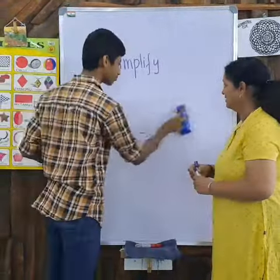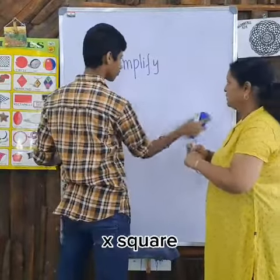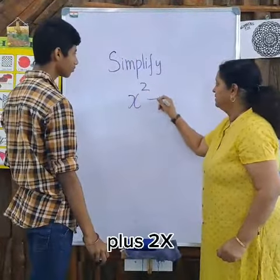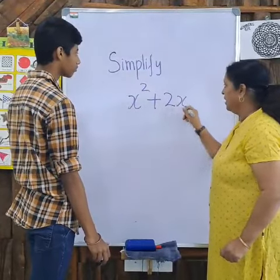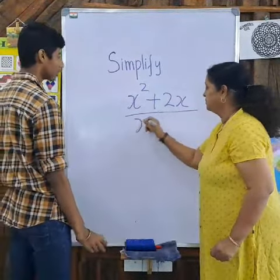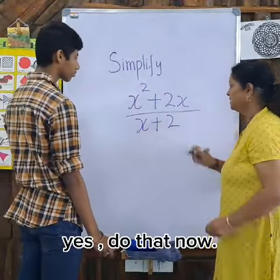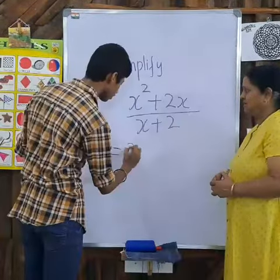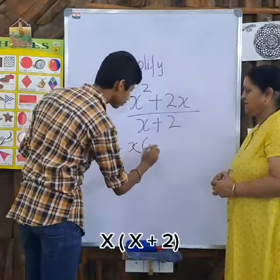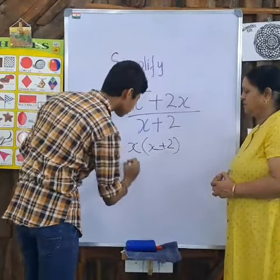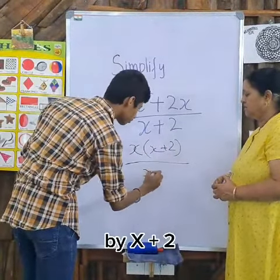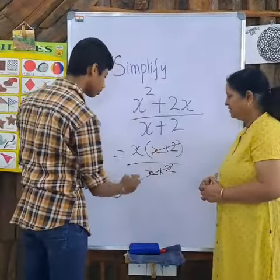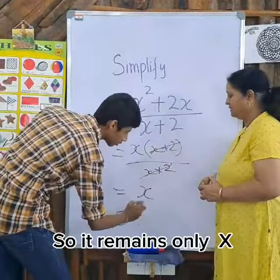I have to factorize. x squared plus 2x by x plus 2. Yes, do that. So x(x plus 2) over (x plus 2). This is the cancellation. So it's only x. Right.